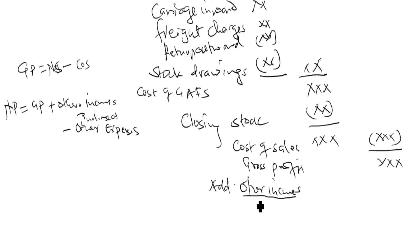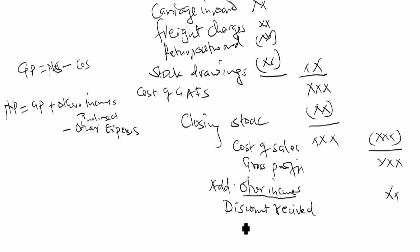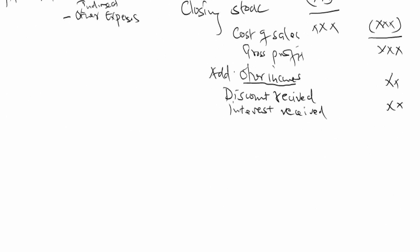Other incomes include things like discount received — when you are doing purchases of goods, you may be given a discount. I'll explain this further after preparing the balance sheet. Discount received is the discount you receive from your suppliers — that's another income. Another could be interest received. We add these to get the total income, which is gross profit plus other incomes.